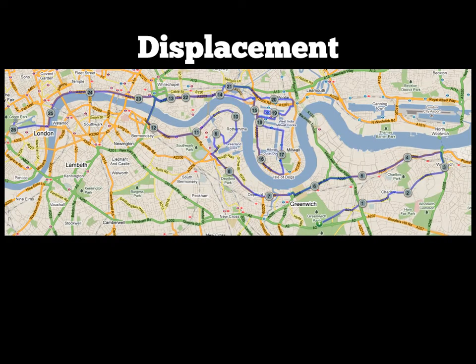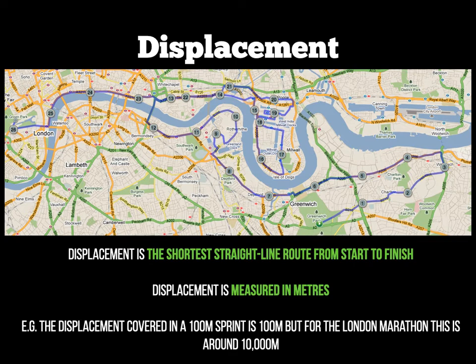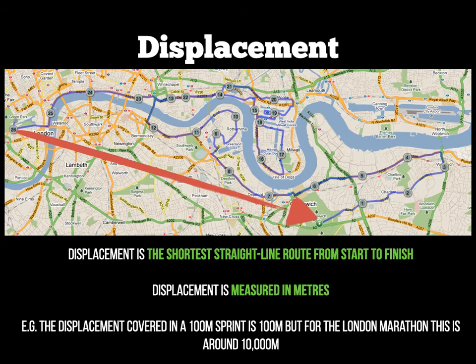Displacement differs from distance. Displacement is the shortest route from start to finish, also measured in metres. Looking at the image of the London Marathon route, the total distance following the path is over 42,000 metres. However, the displacement — the shortest route from the end point back to the start point — is actually only around 10,000 metres.